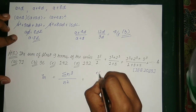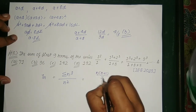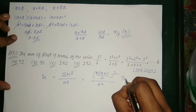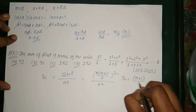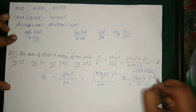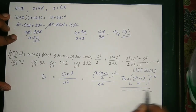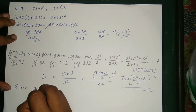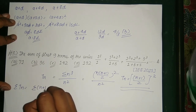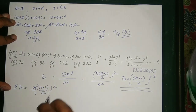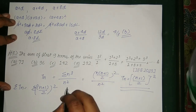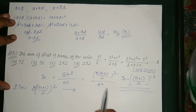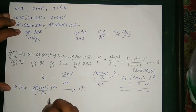The numerator is the summation of n³, which can be written as [n(n+1)/2]². Dividing by n², the general term t_n = [(n+1)/2]². To find the sum of the first 9 terms, we compute the summation of [(n+1)/2]², which we can expand as summation of n²/4 + summation of n/2 + summation of 1/4.